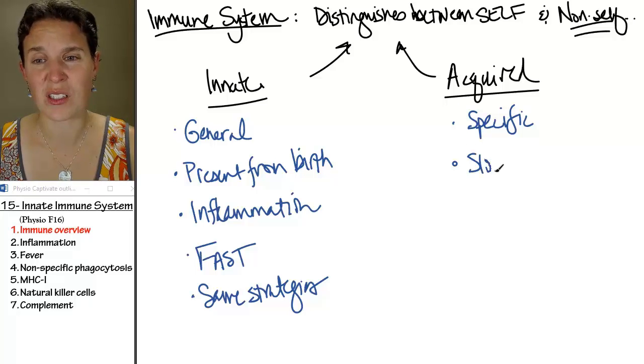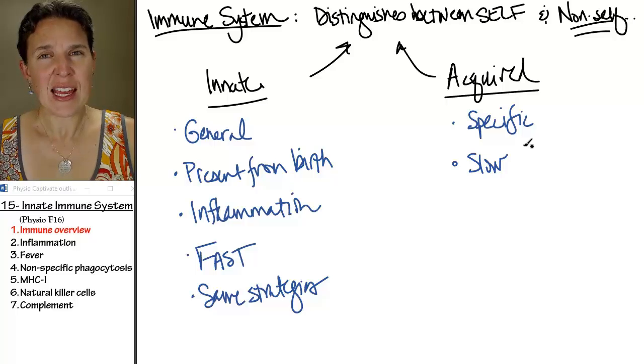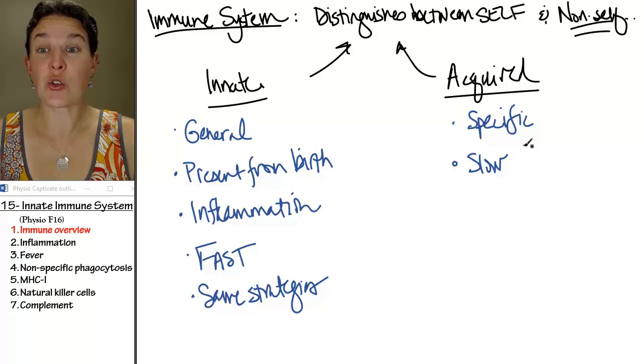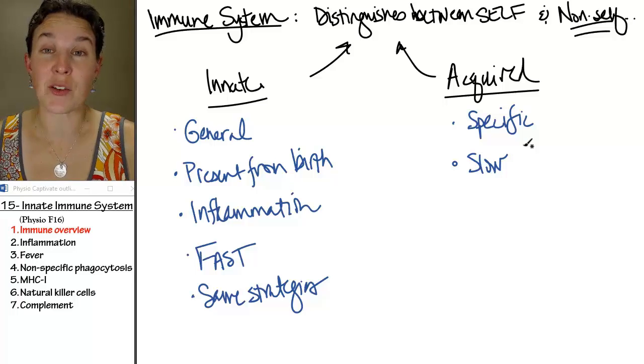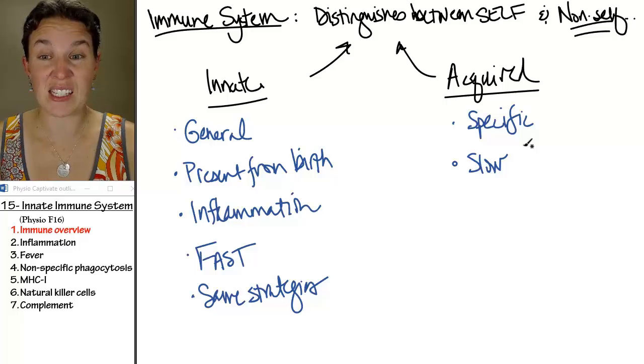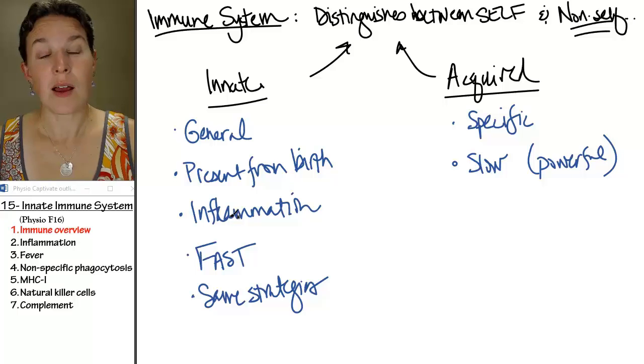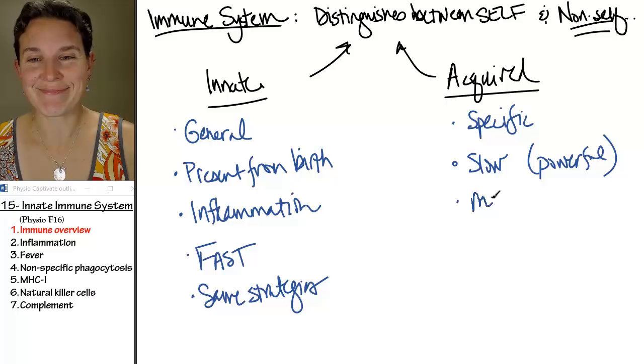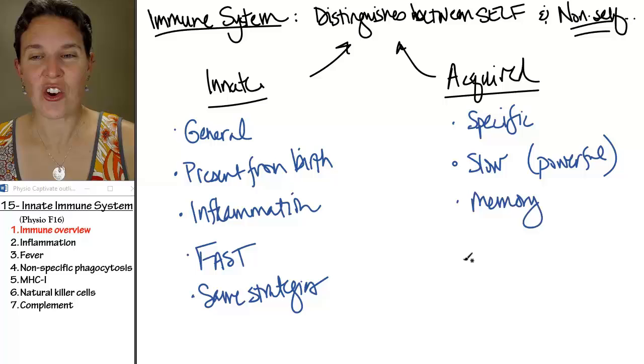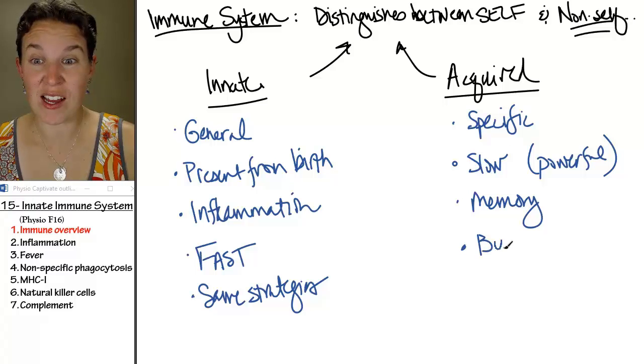It's slower, and so it's usually the acquired immune response is how you get over something, because it's actually slow, but it's powerful. And it has memory, so you can actually build it over time.